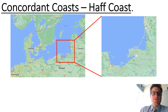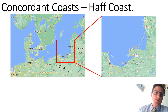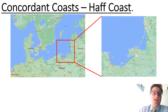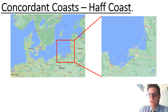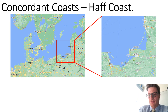We now look at the first of two types of concordant coast. This is called a haff coast, and this is the depositional version of a concordant coast. Here we have long spits of sand that alternate with lagoons. This most specifically refers to the south coast of the Baltic Sea, with the haff being the lagoon. We can see in this map the sections of Poland, Russia, and the Lithuanian coast.